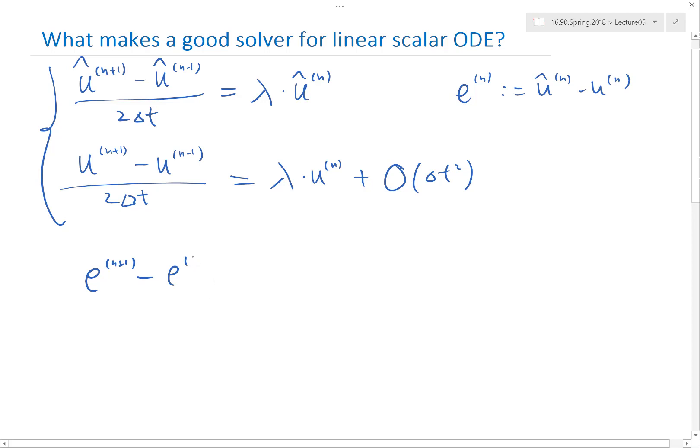No longer n, n minus 1 divided by 2 delta t would be equal to lambda. Subtract the same thing, e to the n plus O delta t squared, right?